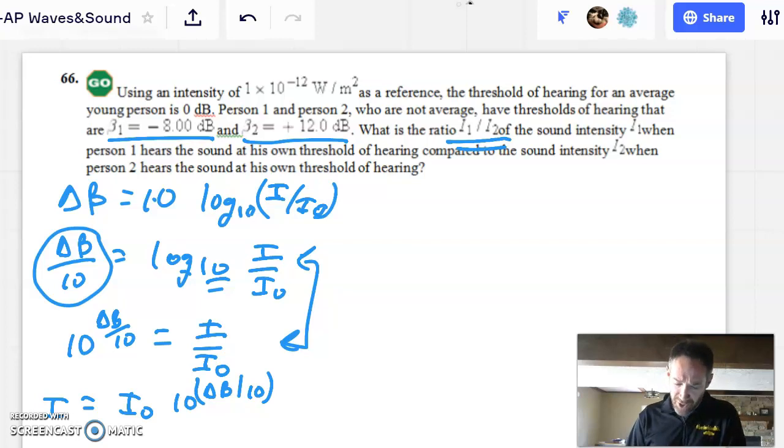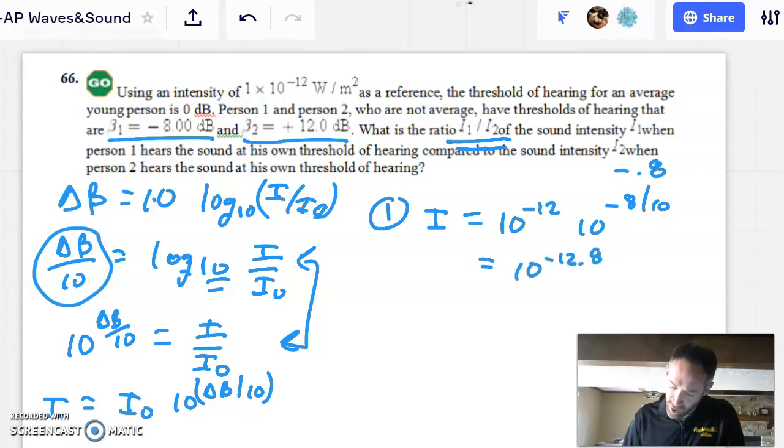Okay, now that seems like a mouthful. Let's do it for each person. So, let's go person one. And the intensity for them that they can just barely hear is the intensity of the threshold of hearing. So that's ten to the minus twelve watts per square meter times ten to the change in sound level for them. That's negative eight over ten. So you could just put this into your machine, but maybe you don't need to do that. Maybe you can say this is ten to the minus twelve and ten to the negative point eight. So this will be ten to the negative twelve point eight.